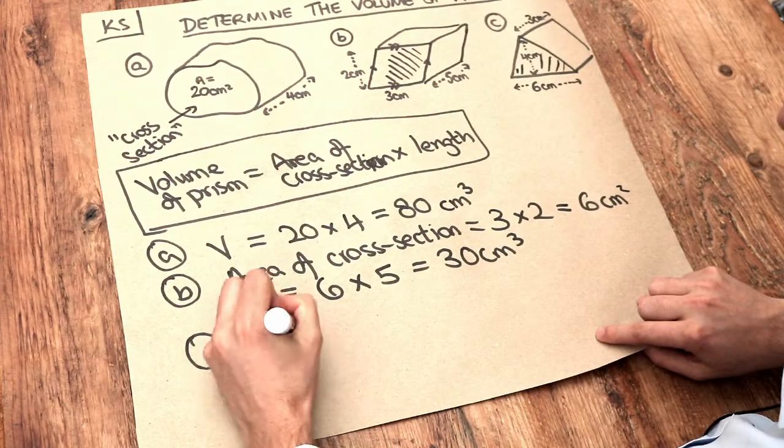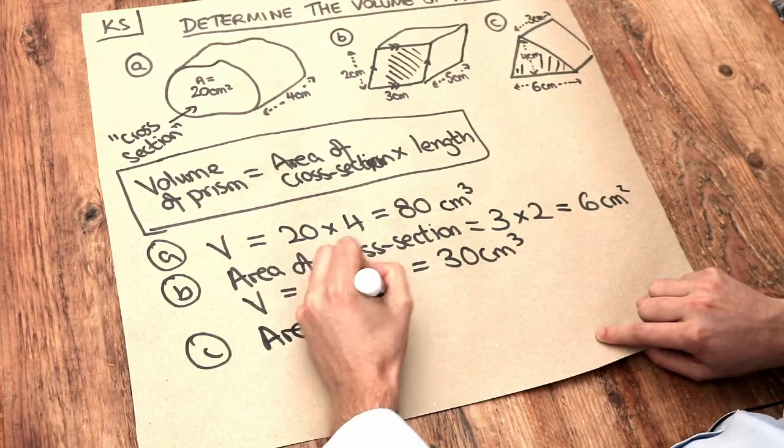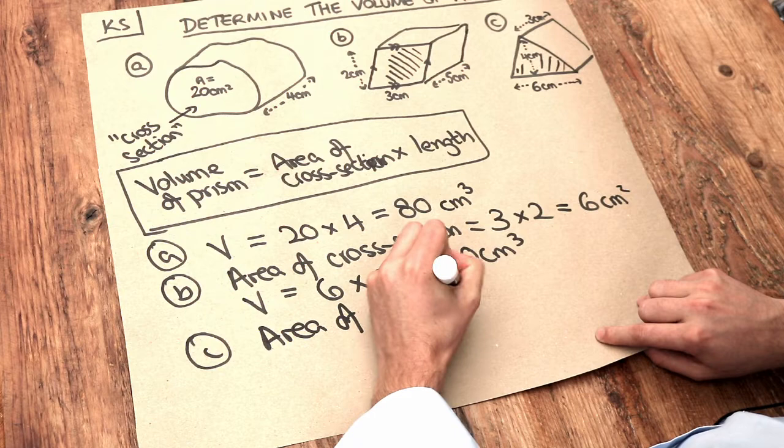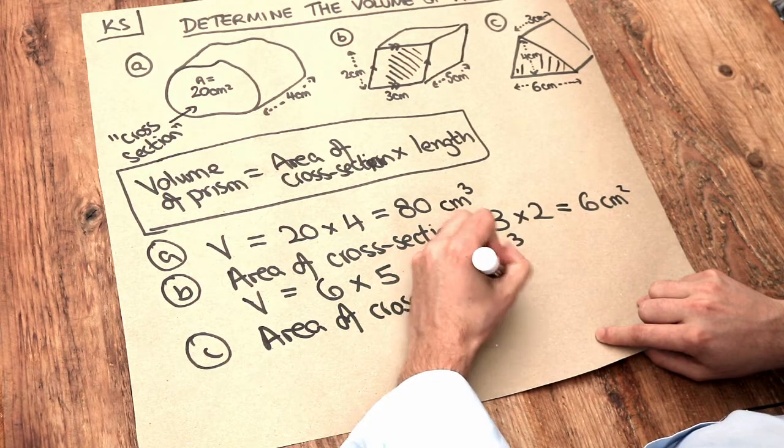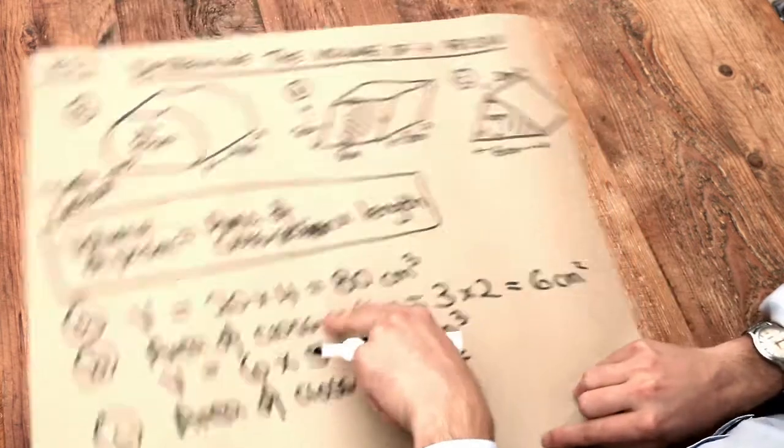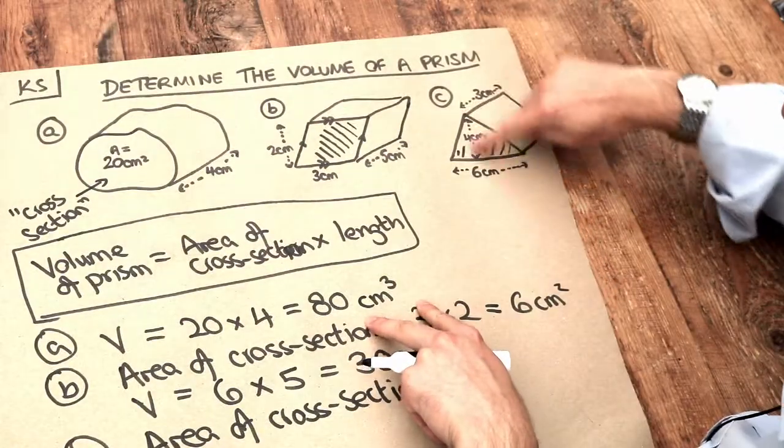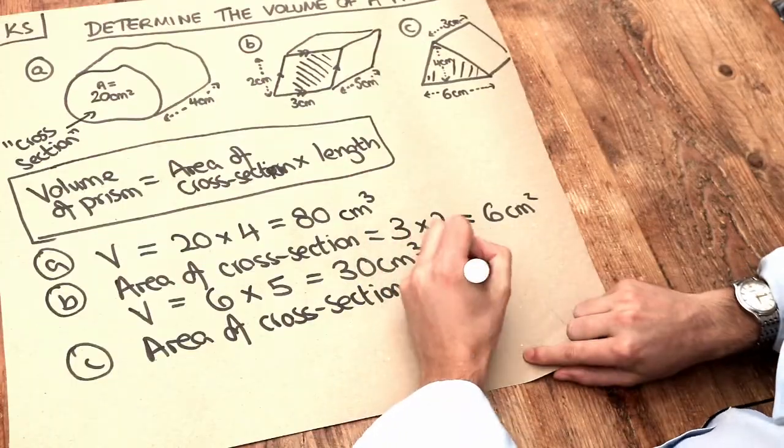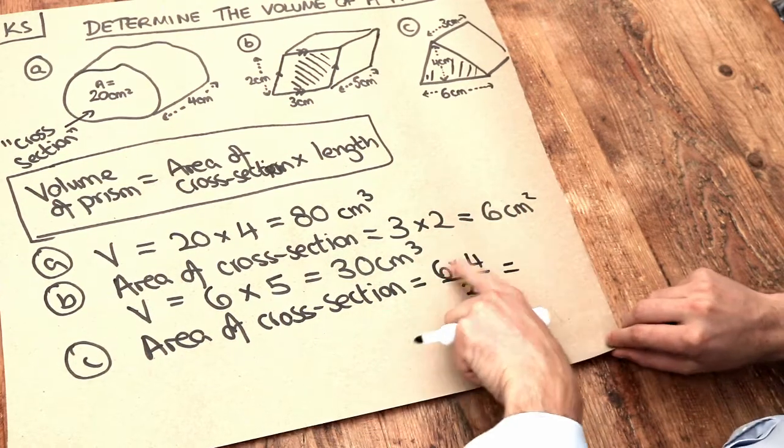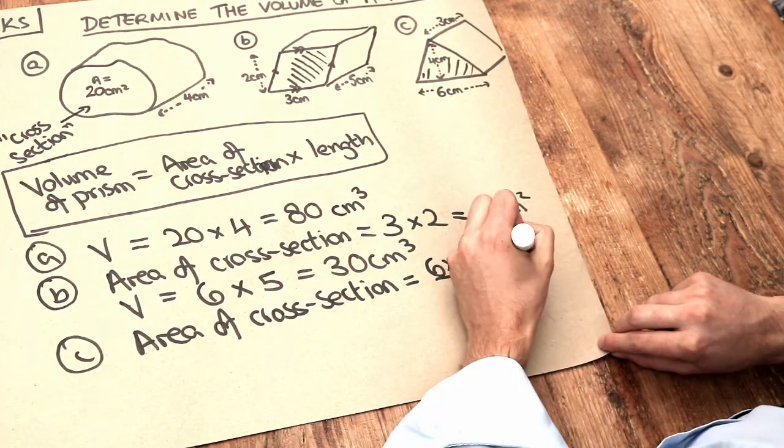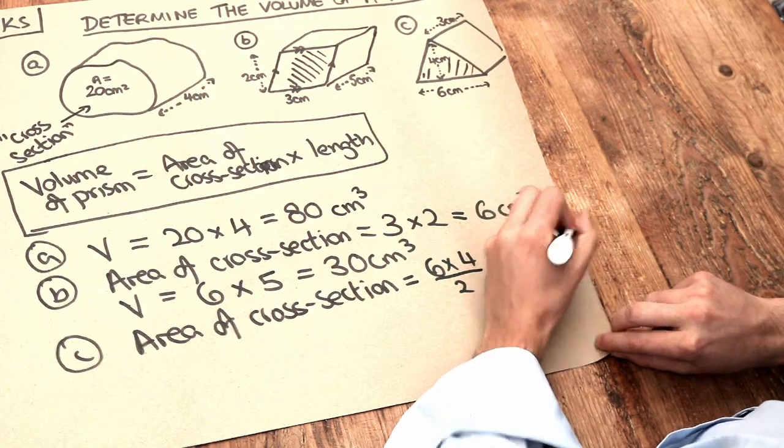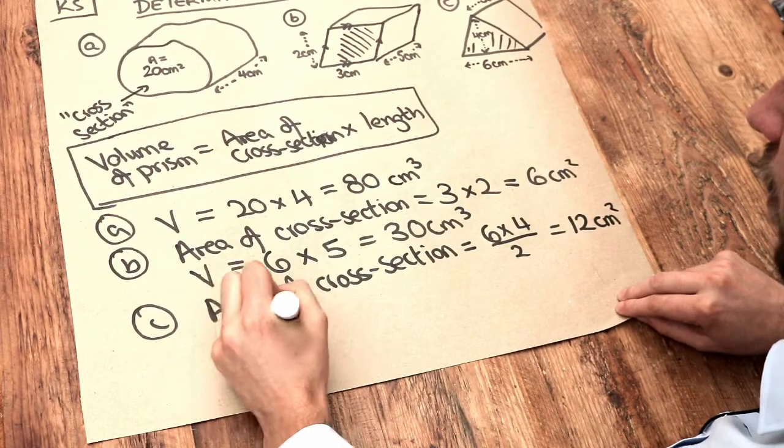Now the area of a triangle is just the base times the height divided by 2. So it's the base of 6 multiplied by the perpendicular height of 4 and divided by 2. 6 times 4 is 24 divided by 2 is 12. So that area is 12 centimetres squared.